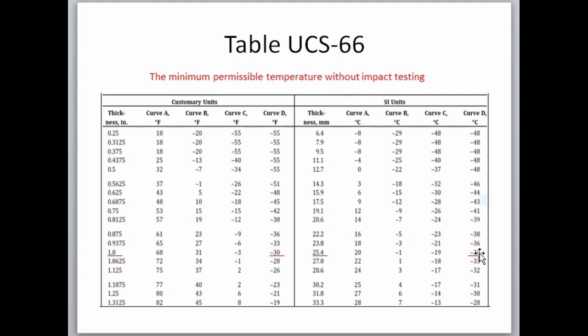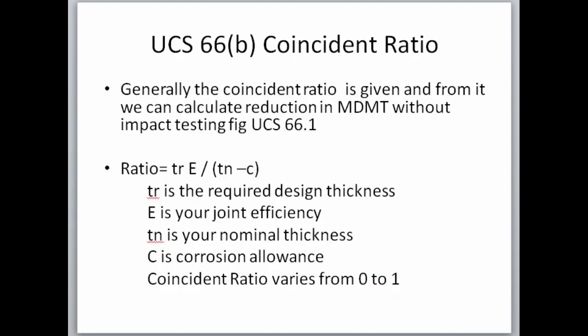Figure UCS66 is also available as a table. For our 1-inch SA516 Grade 70 material, which falls under Curve D, the material is exempted from impact testing only down to minus 35°C. Since our MDMT is minus 36°C, we are not exempted and must proceed to check UCS66B. UCS66B is based on a coincidence ratio, from which we can calculate a reduction in MDMT without impact testing using Figure UCS66.1.